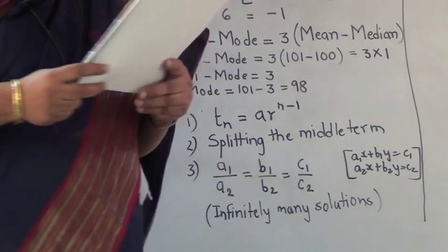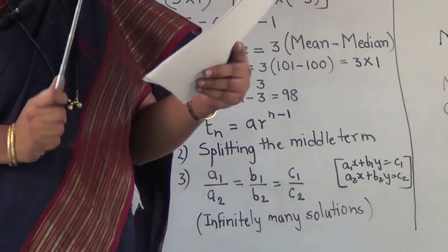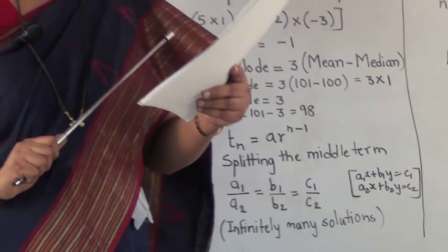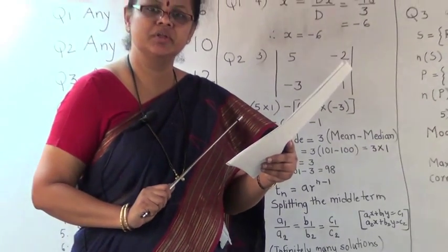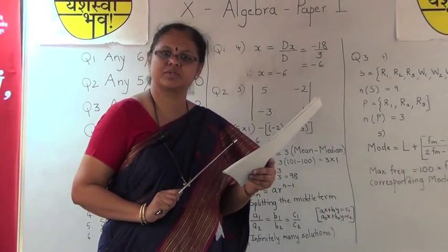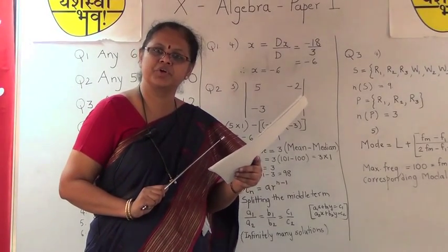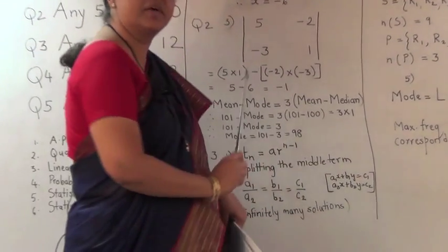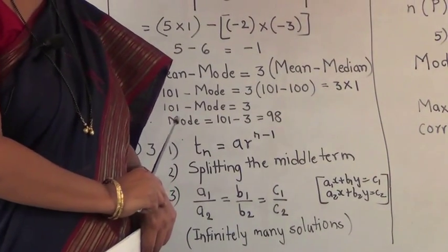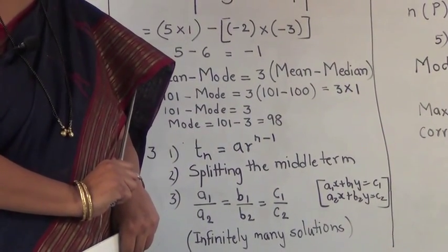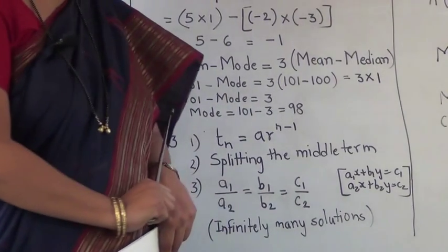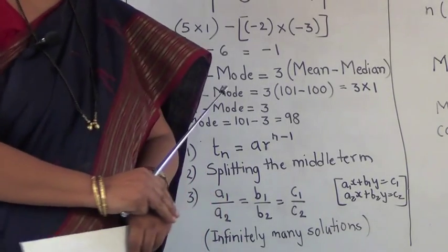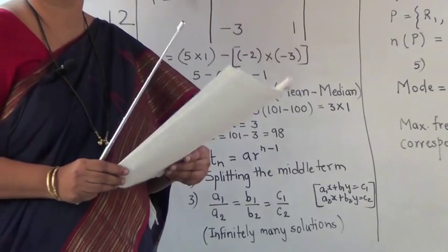Sum number 3 is a little different type. The question asks: without actually solving the simultaneous equations, decide whether there is a unique solution, no solution, or infinitely many solutions. Write the two equations in the form a1x + b1y = c1 and a2x + b2y = c2, then find the values of a1, a2, b1, b2, c1, c2 and write them in ratio form. If a1/a2 = b1/b2 = c1/c2, then the given simultaneous equations have infinitely many solutions.